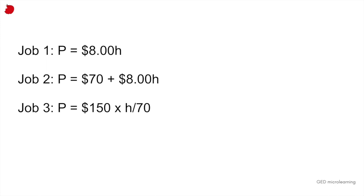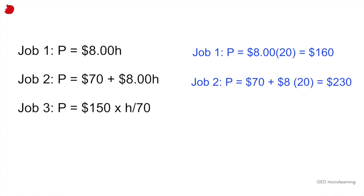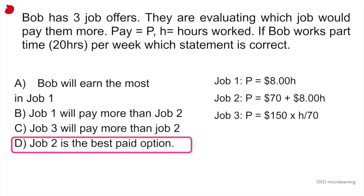So for the first one, they tell us that the pay is going to be $8 multiplied by hour. And we said they're working 20 hours. So it would be eight times 20. So he would get $160. The second job seems a little bit better, right? Because aside from getting paid $8 per hour, they are going to add $70 on top. So you can see he earns 230. And then the third job, again, you would put that value for the hours worked where the H is, and it gives you 150. So you can see that the best deal for them would be to take job two. So the correct answer would be letter D.